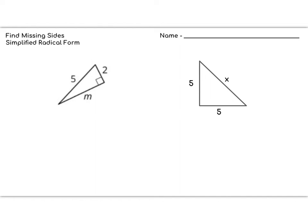We are still using the Pythagorean Theorem to find unknown sides of right triangles, but today we're going to leave our answers a little different. We are not going to simply plug in the square root into the calculator, get a decimal, and round it. We are going to leave our answers in simplified radical form — a more exact form.